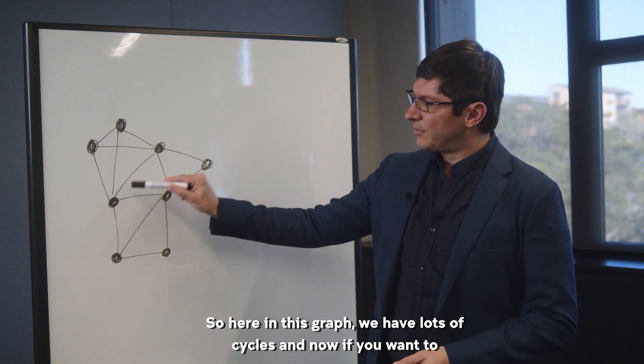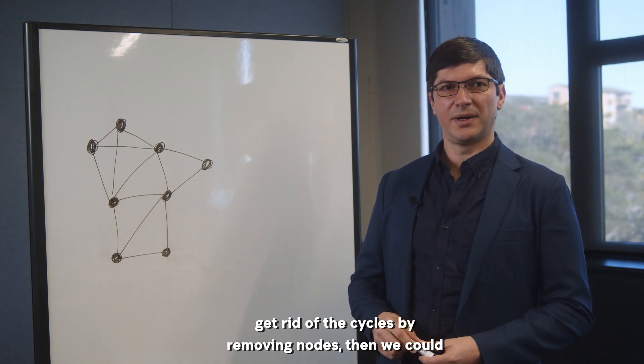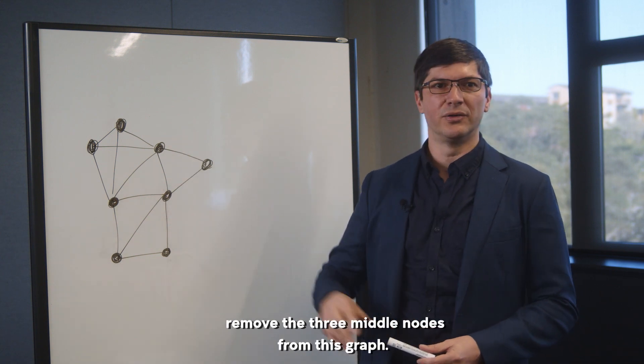Here in this graph we have lots of cycles. If you want to get rid of these cycles by removing nodes, then we could remove the three middle nodes from this graph.